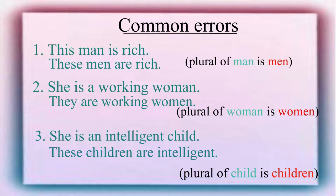Example 3: She is an intelligent child. These children are intelligent. The plural of child is children.